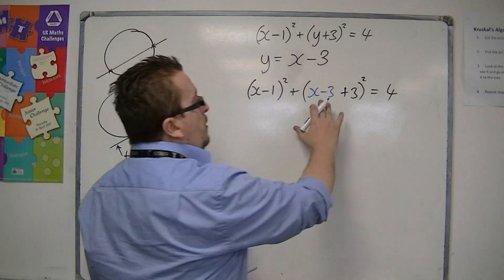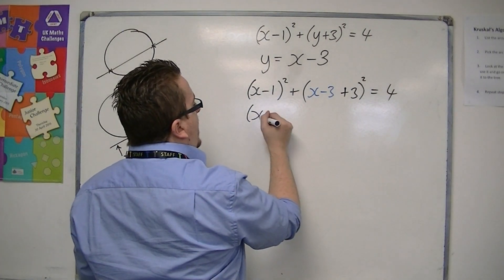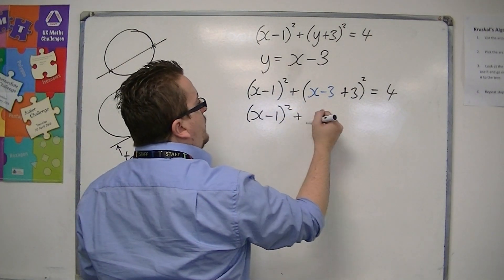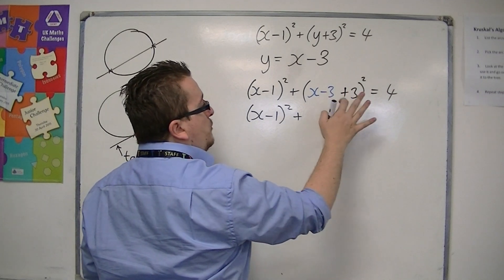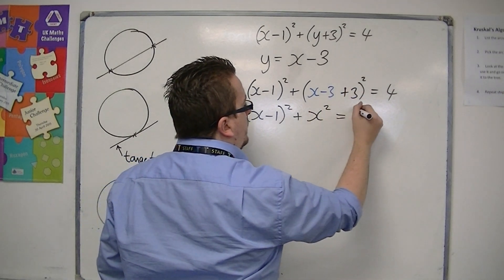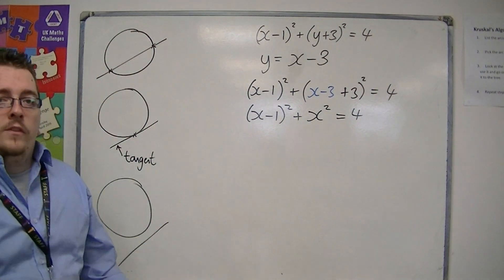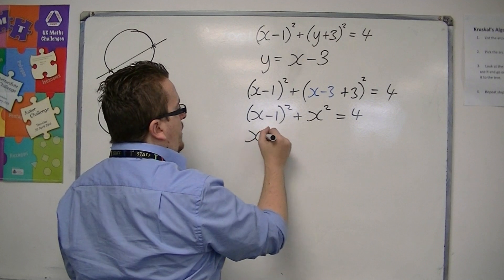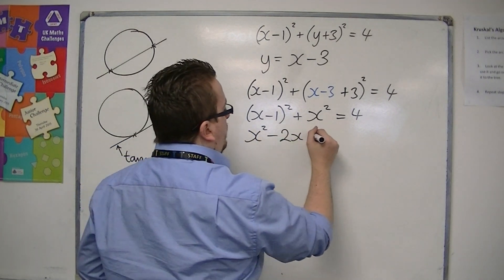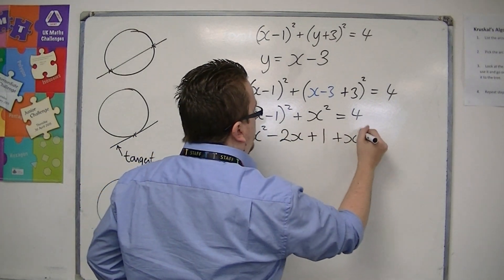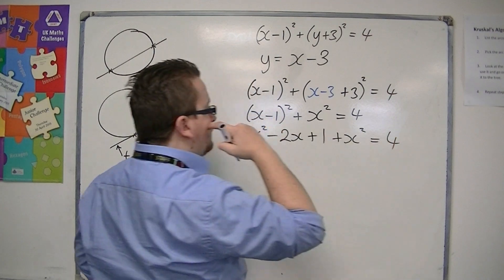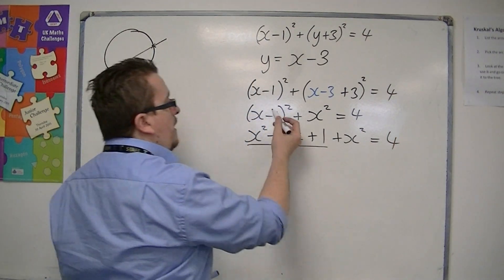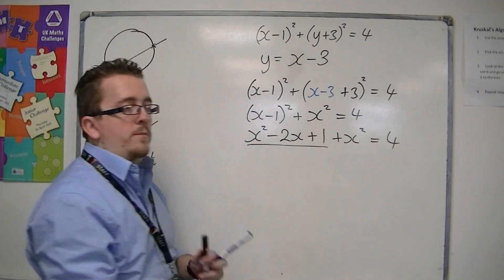So let's simplify this bracket so that we get x minus one squared plus, that would just be now because minus three plus three is zero, just x squared. So then multiply out the brackets. So we get x squared minus two x plus one plus the x squared is equal to four.